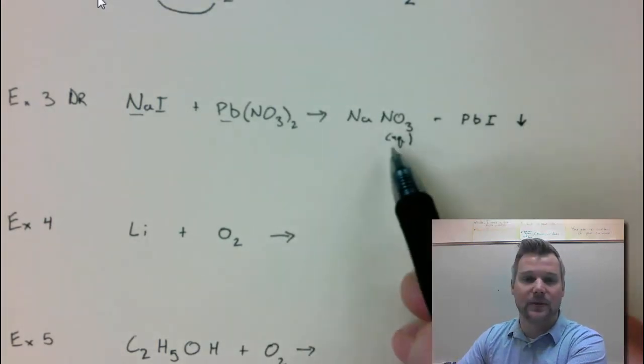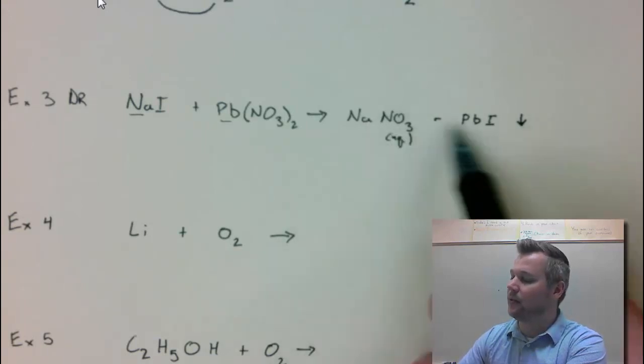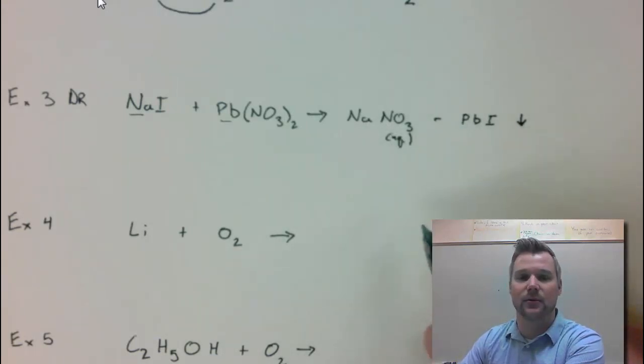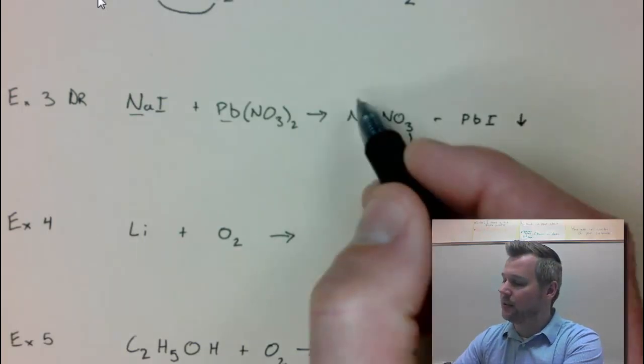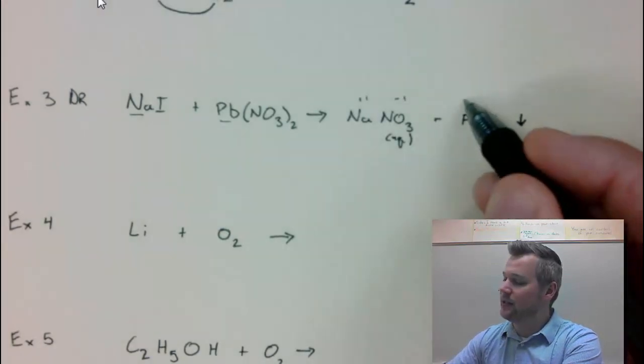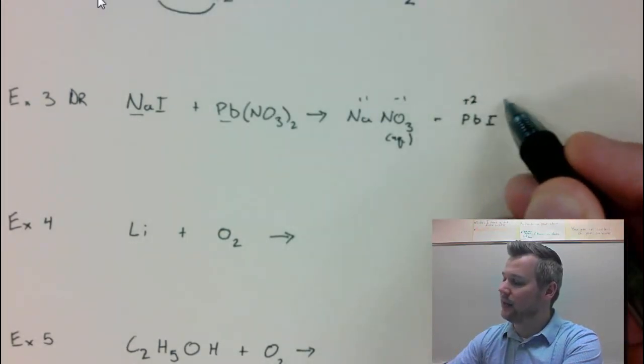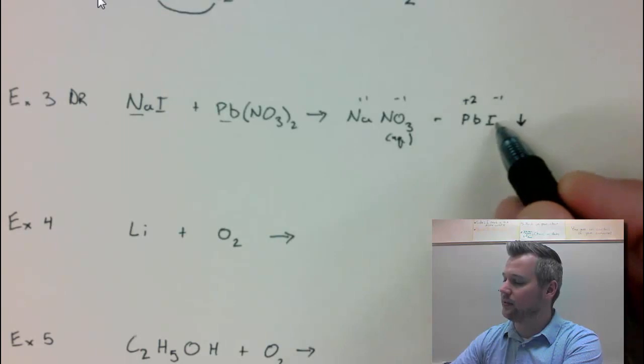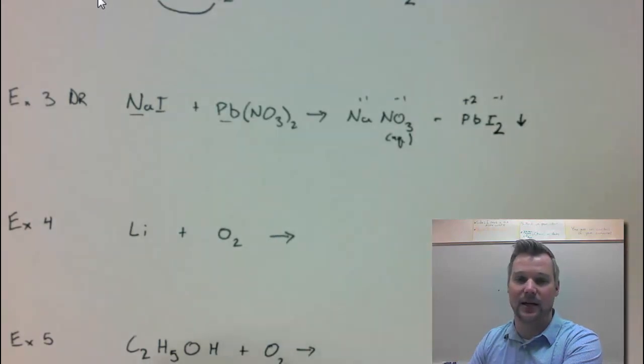For double replacement, sometimes it's easier to check if they go to completion after you've written down the products, which is kind of step 1 and step 2 meshing together. Step 3, check your charges. Plus 1, minus 1. That's a good formula. Lead we already decided was lead 2. Iodide is minus 1. So I need to crisscross put a subscript 2 right here on the back end of iodide.